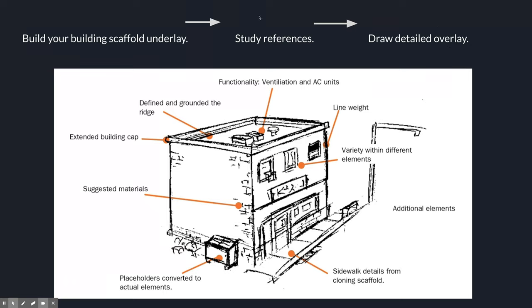Looking at this building from earlier: there's a ventilation system built in, a cap on top to keep rain off people's heads, and line weight as a drawing technique. I had to know the anatomy of a building before getting here — scaffold done on the underlay, then study references for building anatomy, then draw the overlay. The materials tell a story: brick texture is suggested, not drawn over the entire thing. A placeholder cube becomes a dumpster; the sidewalk comes from the cloning scaffold.